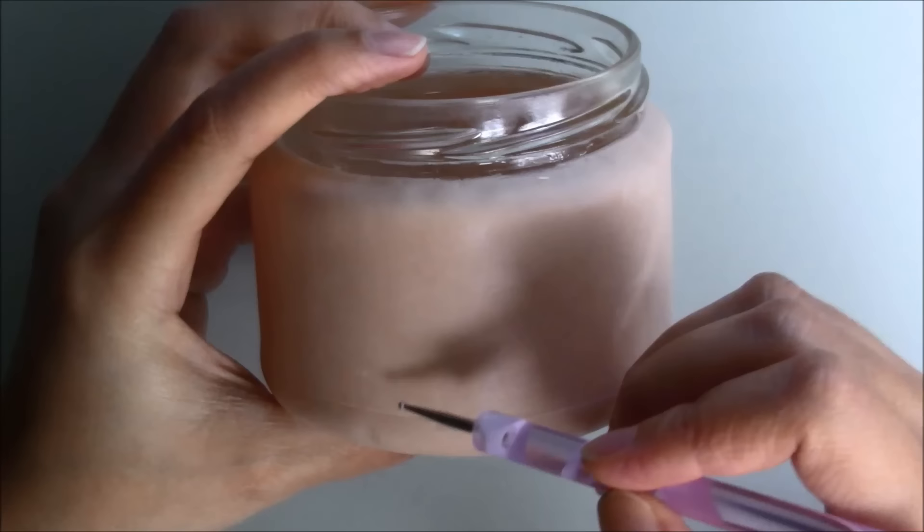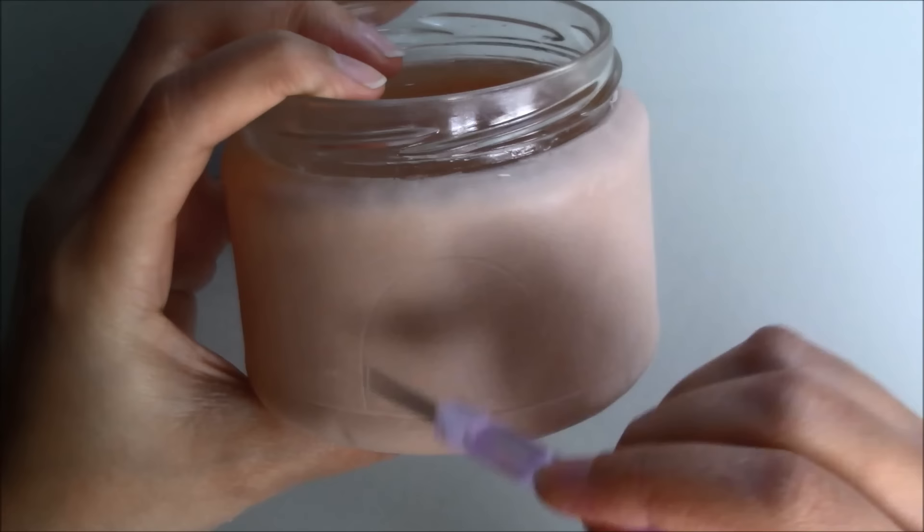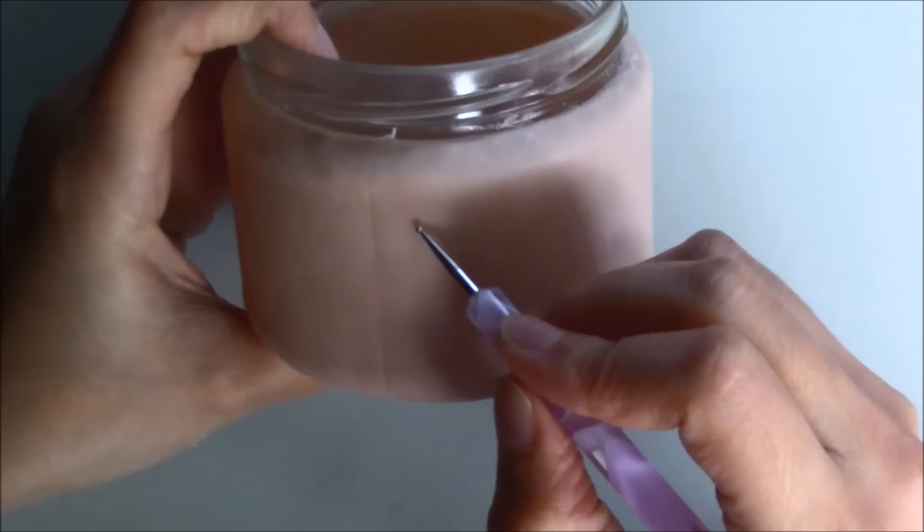I marked where I wanted the door and windows to be and cut out the windows using a round cutter. If you don't have a cutter you can use a knife or a blade.